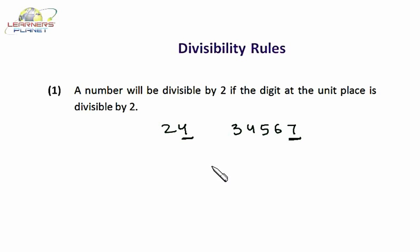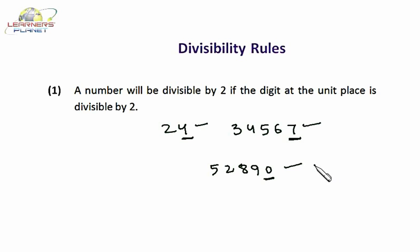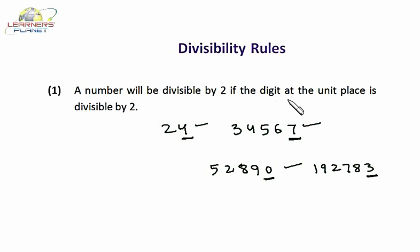I take another example: 52890. At the unit place we have 0, and since 0 is even, all even numbers are divisible by 2, so this number is divisible by 2. And if I have another number, say 192783 — just see the unit digit, it is 3. It's odd, not even. So the entire number 192783 will not be divisible by 2. So a number will be divisible by 2 if the digit at the unit's place is even. Just by looking at the unit digit, you can say whether the given number is divisible by 2 or not.